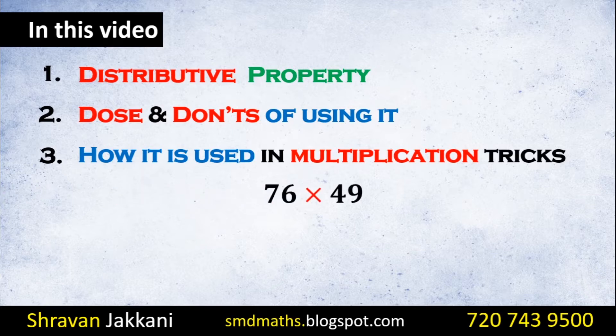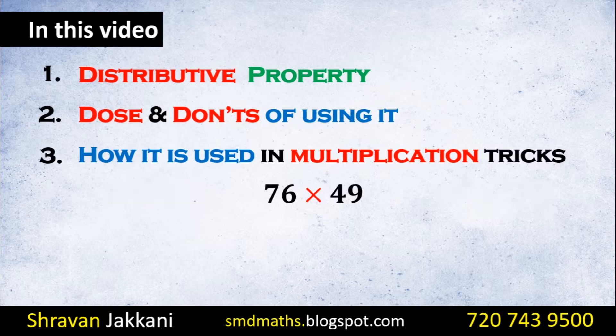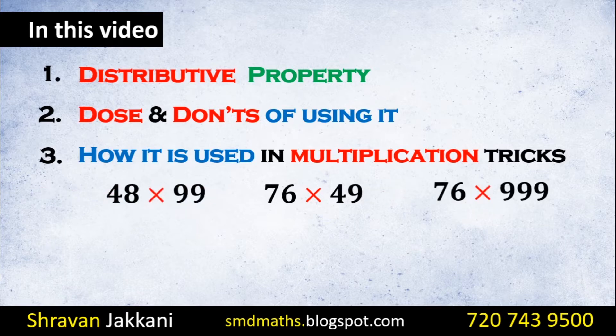For example, here on the screen we have: any number times 49, any number times 99, any number times 999. If we have a multiplication like these, we can use this property.